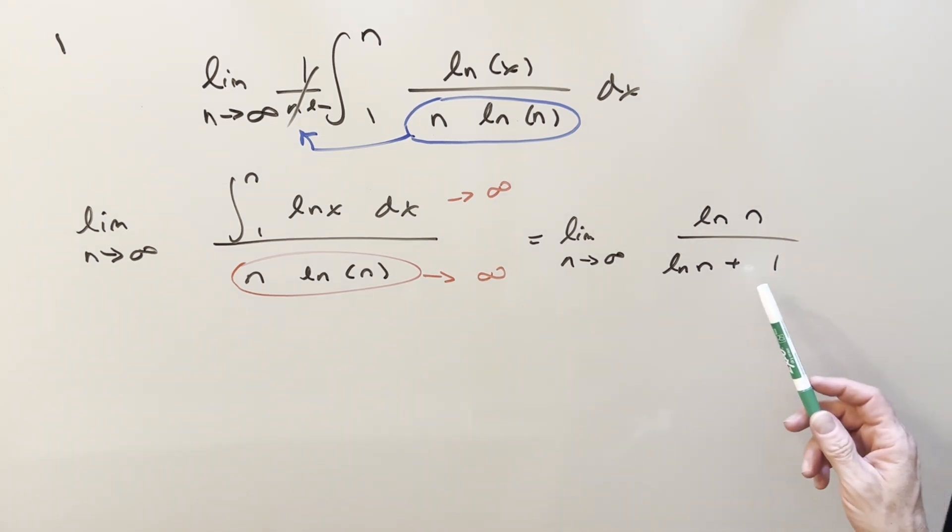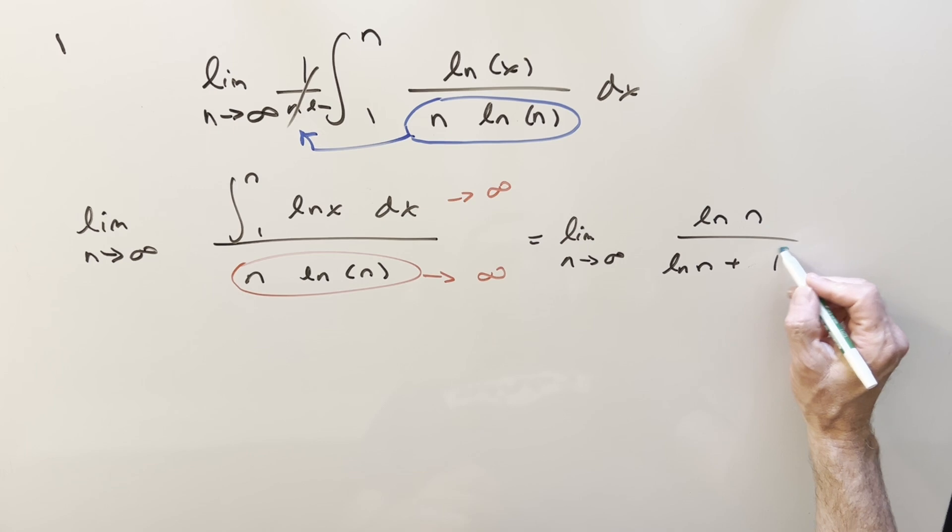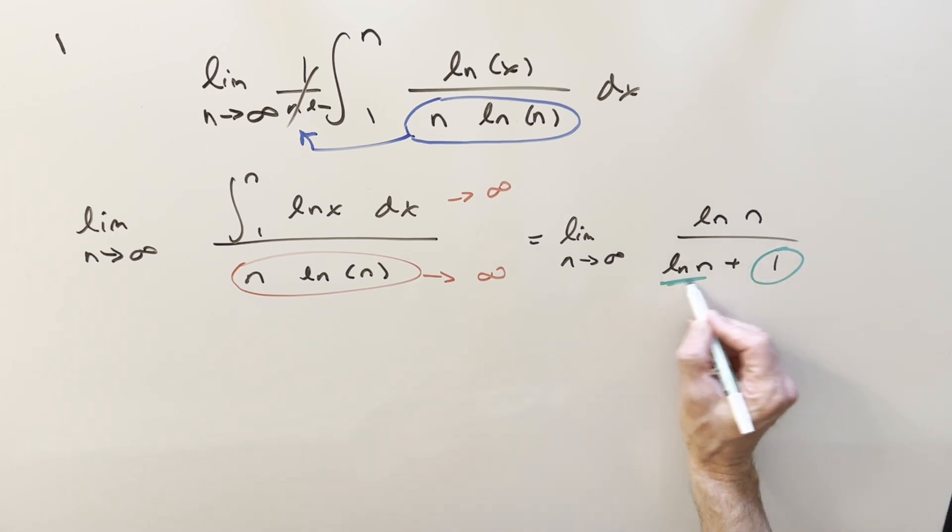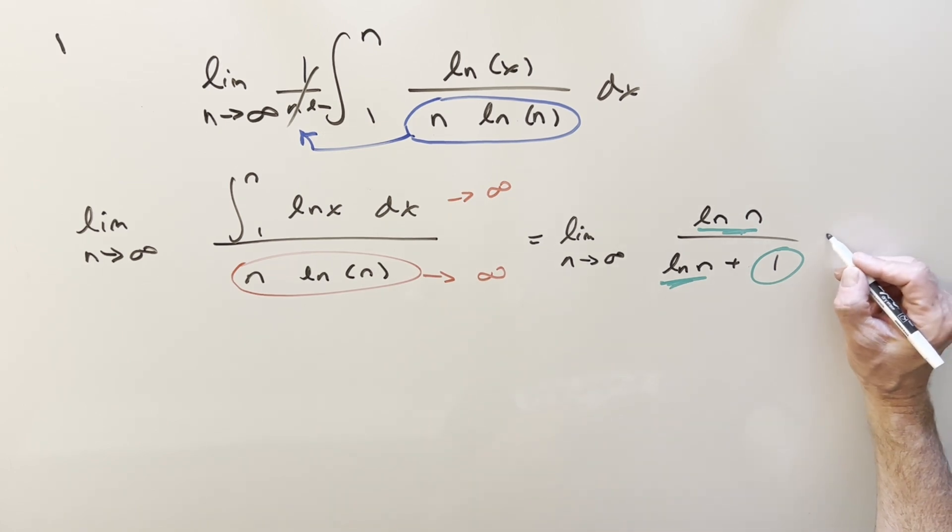But when we evaluate this limit, this 1 is not really going to be doing anything compared to this going off to infinity. So we can just kind of quickly evaluate this limit, and this is going to be my final solution of just 1. And that's it.